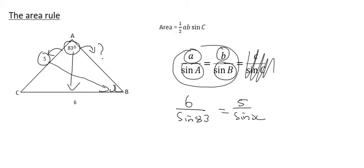Then something I didn't mention in the previous video on the sin rule is that you can switch this around completely, but then you must switch both sides around. So you can go sin 83 over 6 equals to sin x over 5.